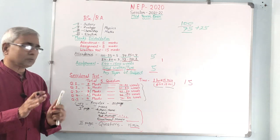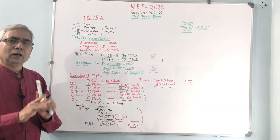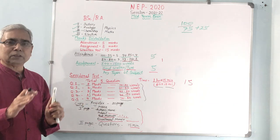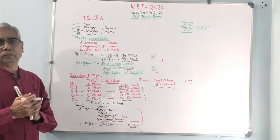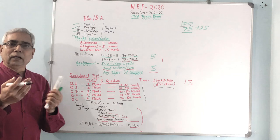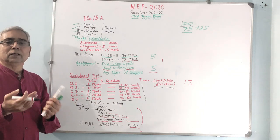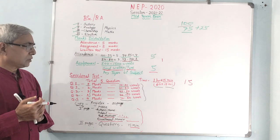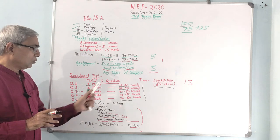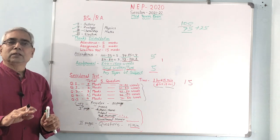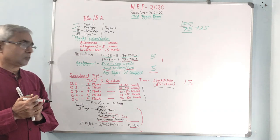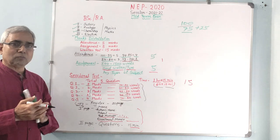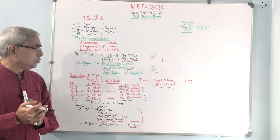This question paper pattern will be the same for every subject — whether you are a student of botany, geology, chemistry, physics, maths, ancient history, medieval history, geography, psychology, home science, or commerce. In this TD college and other colleges associated with Purvanchal University, everywhere the same question paper pattern and same marks distribution will be followed. So there should be no confusion for anyone regarding this.